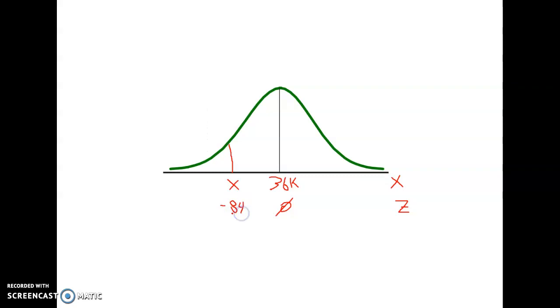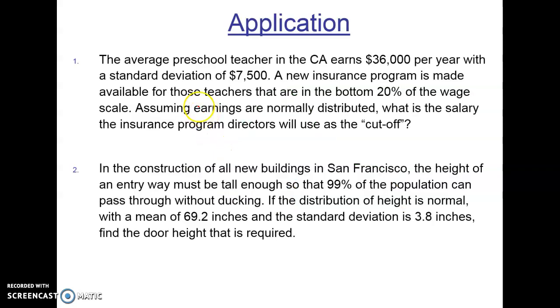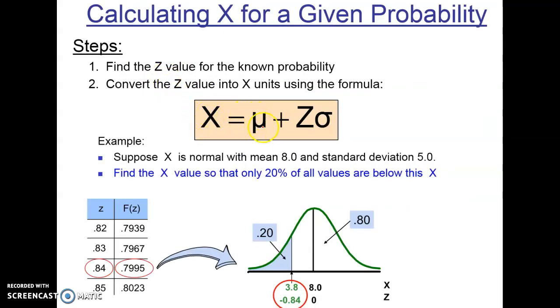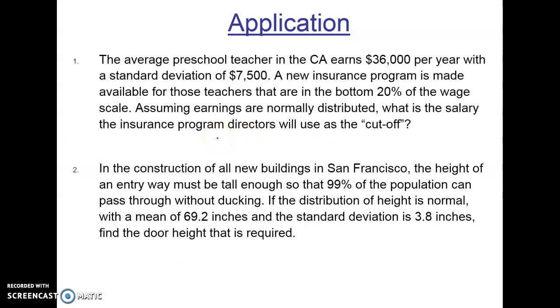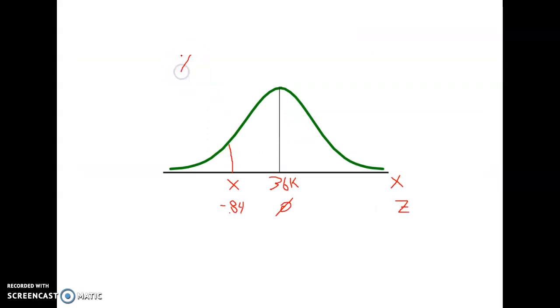Once we have that Z value, then we can convert it into an X value. Going back to our formula, X is equal to the mean plus Z times the standard deviation. So let's do that. Well, our X value will be equal to the mean. We know the mean is 36,000, plus the Z value, which we said is negative 0.84 times the standard deviation, which is 7,500.